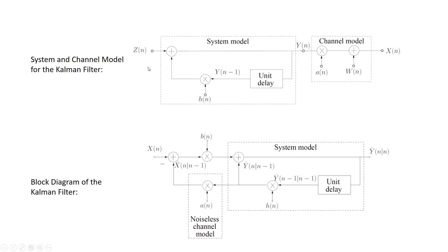In a previous video, we saw how the system and channel models of the Kalman filter are set. We described how the unknown and unobservable process Y is described by the state model represented in a block diagram. The value of the sample of the process Y at time n depends only on the value of the process at the previous time instant, weighted by a sequence of known and deterministic coefficients H, and added with a white noise process Z. In addition, this unobservable process maps into the observable process X in a linear manner.